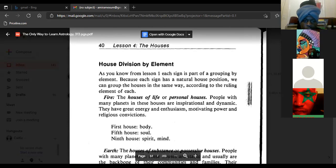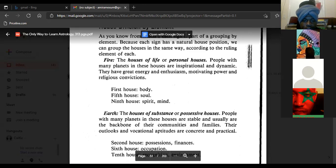House division by element. As you know from lesson one, each sign is part of a grouping by element. Because each sign has a natural house position, we can group the houses in the same way according to the ruling element of each. Fire, the houses of life or personal houses. People with many planets in these houses are inspirational, emotional, and dynamic, and they have great energy and enthusiasm, motivating power, and religious convictions. First house: body. Fifth house: soul. Ninth house: spirit and mind.